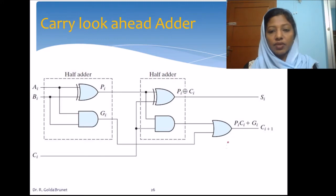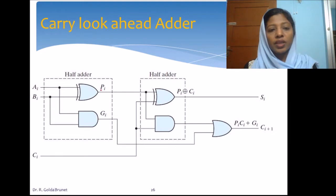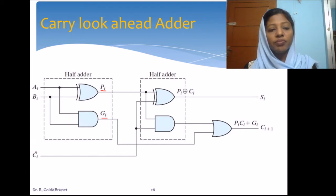This is the full adder circuit that we have already seen. Here we are going to use two terms: the carry propagate term and the carry generate term. Pi and Gi will be able to be generated as soon as we supply the inputs. So if we supply the input at time t0, we are able to get this output at time t1.